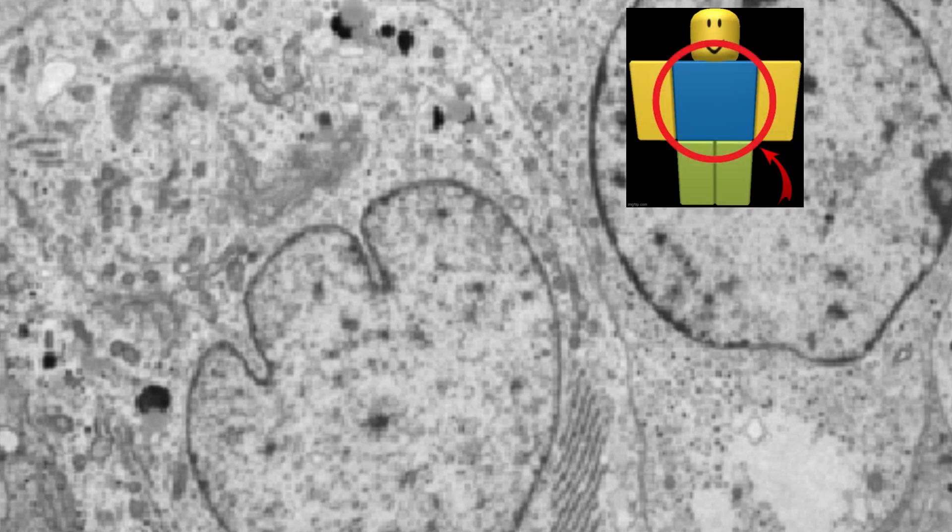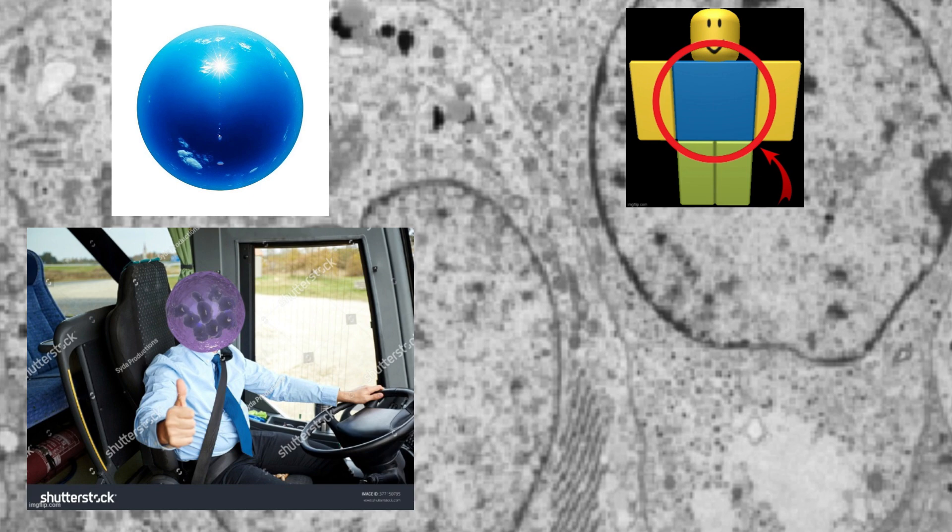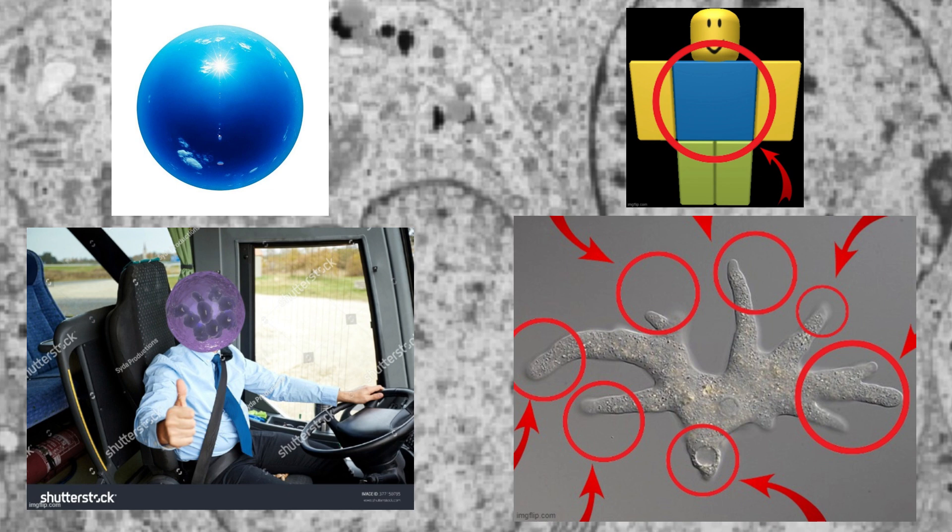Next, cytoplasm. The cytoplasm forms the body of the amoeba and gives its shape, transports nutrients, and forms the pseudopodia, which are cytoplasm-based structures connected to the amoeba that help with the capture of food.